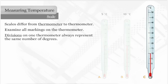Now, take a look at thermometer C. Each division represents five degrees.